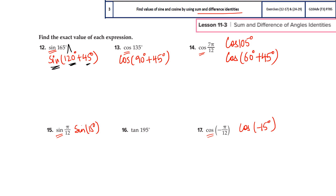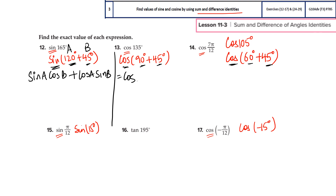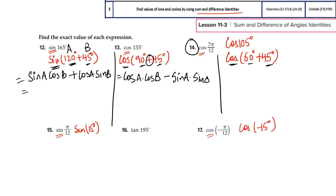For the first one, we can use the sum identity because it equals the special angles 120 + 45. The long method uses the identity; you can also check with a calculator. If the question says 'use the sum and difference identity to find the value,' you must show your working. So 105 can be written as 60 + 45 — both are special angles. Sine(A + B) = sin A cos B + cos A sin B. For cos(A + B) = cos A cos B − sin A sin B — remember the minus sign, don't make that mistake.